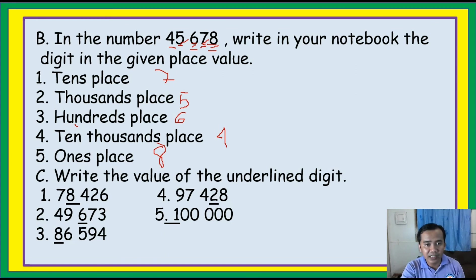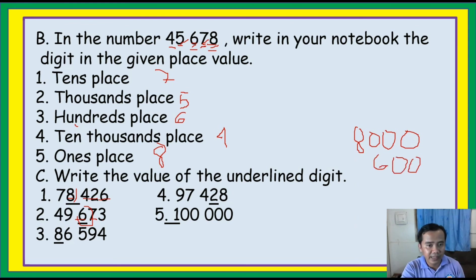Write the value of the underlined digit. Number one: the underlined digit is 8. Ones, tens, hundreds, thousands — so eight thousands is 8,000. Number two: six. Ones, tens, hundreds — six hundreds is 600. Number three: ones, tens, hundreds, thousands, ten-thousands — eight ten-thousands is 80,000. Now try number four and number five.